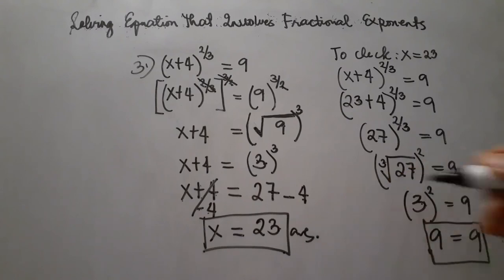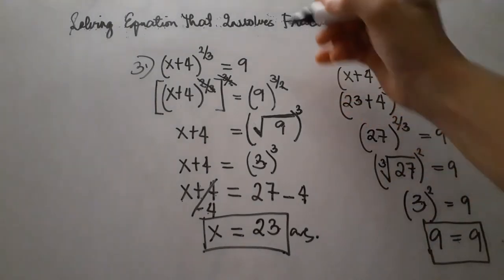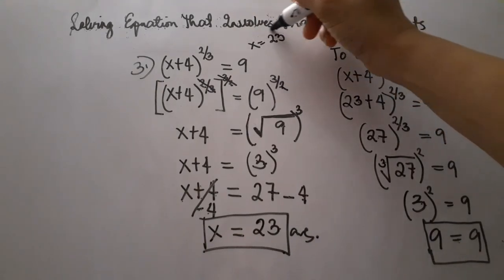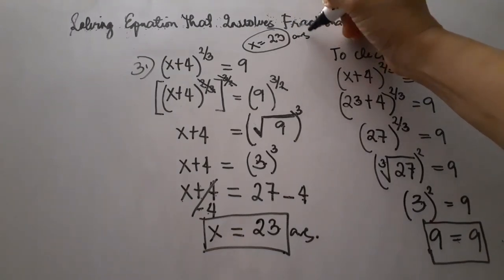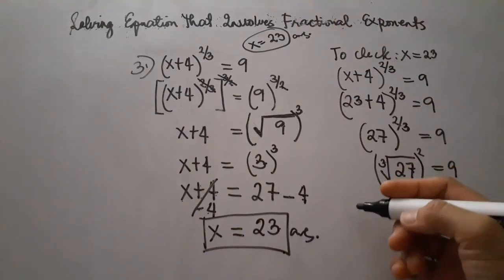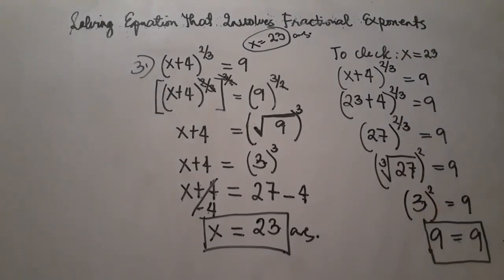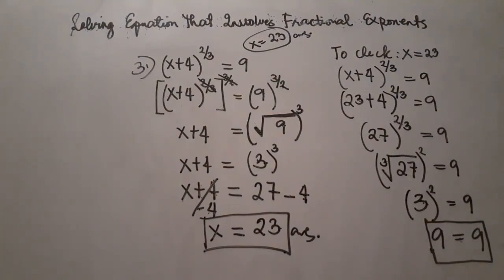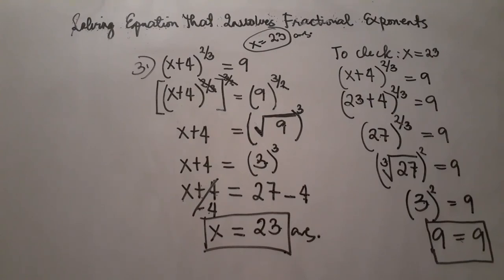We can write our answer: x equals 23. That's how we check our answers — we substitute back and verify both sides of the equation are equal. Please review my other videos to understand where this comes from. Thank you, bye bye!